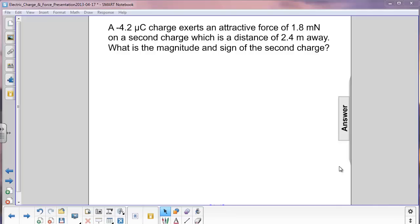A negative 4.2 microcoulomb charge exerts an attractive force of 1.8 millinewtons on a second charge which is a distance of 2.4 meters away. What is the magnitude and sign of the second charge?